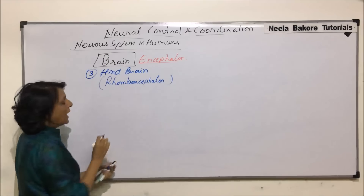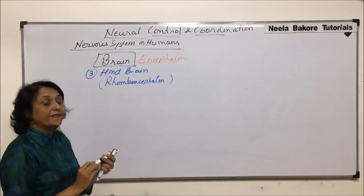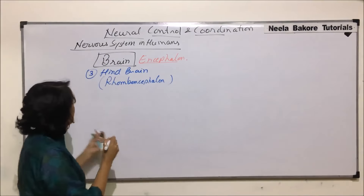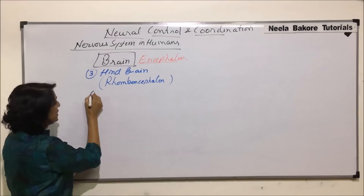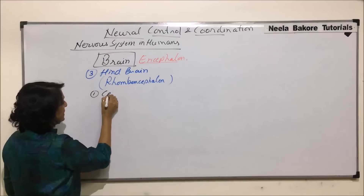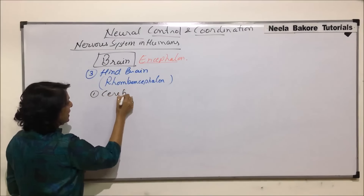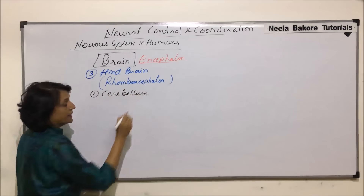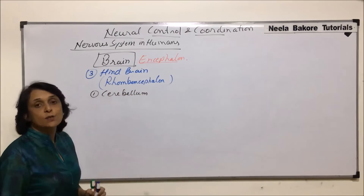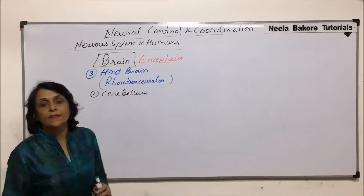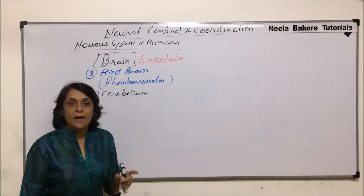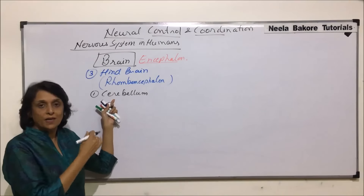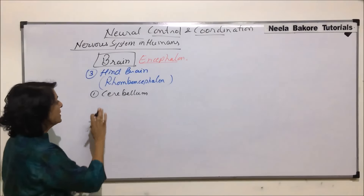In the hind brain, there are three parts. The first is cerebellum, the second is pons, and the third is medulla. Let us talk about these parts one by one.